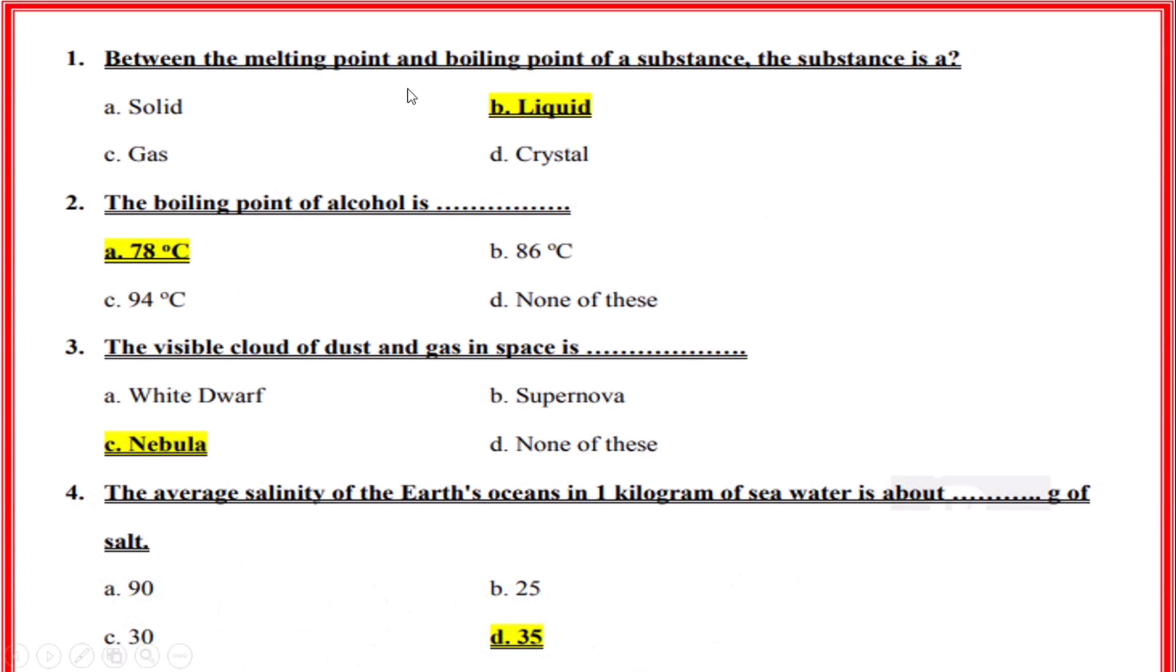Between the melting point and boiling point of a substance, the substance is a? Correct option: B, Liquid. The boiling point of alcohol is? Correct option: A, 78 degrees Celsius.